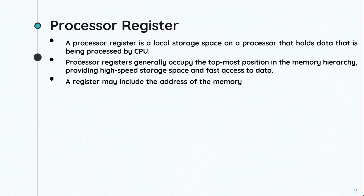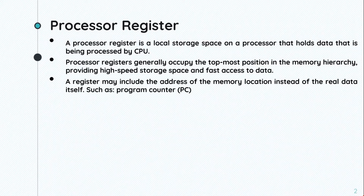The register may include the address of a memory location instead of the real data itself, such as the program counter. This means the register holds the memory address rather than the actual data — for example, the program counter register.